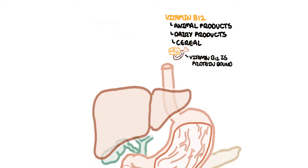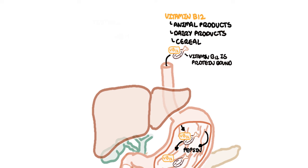So we masticate, we chew the food and then it enters the stomach. The vitamin B12 and protein complex is then exposed to the acidic environment of the stomach, and then pepsin, which is an enzyme, will dissociate vitamin B12 from the protein.